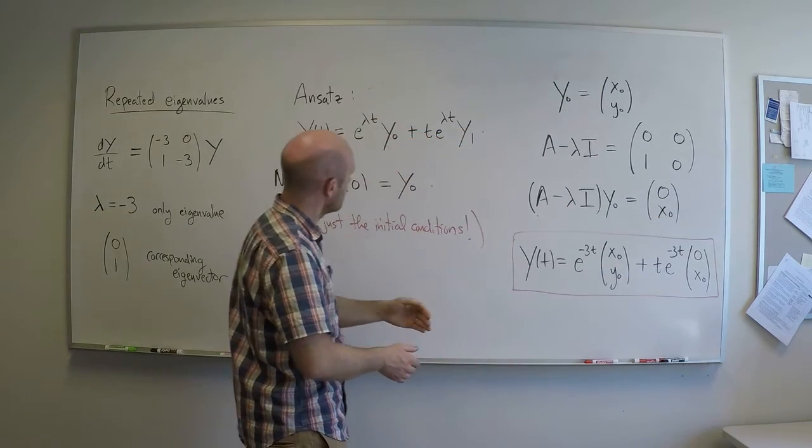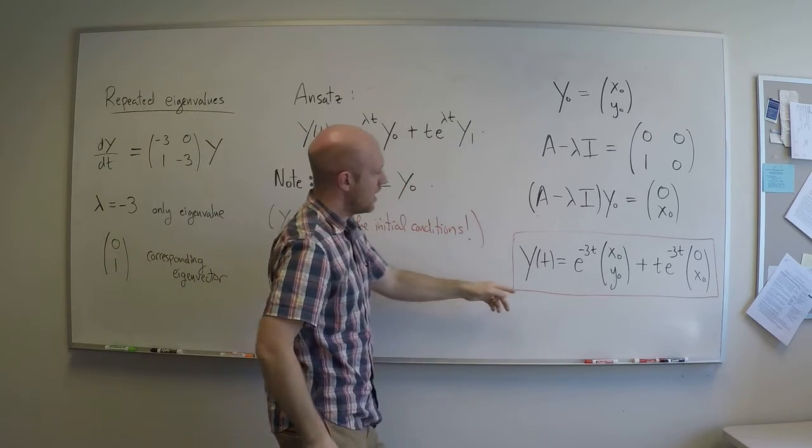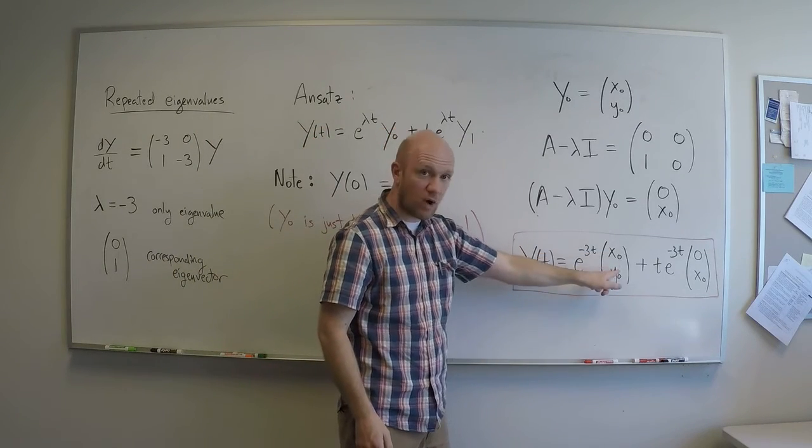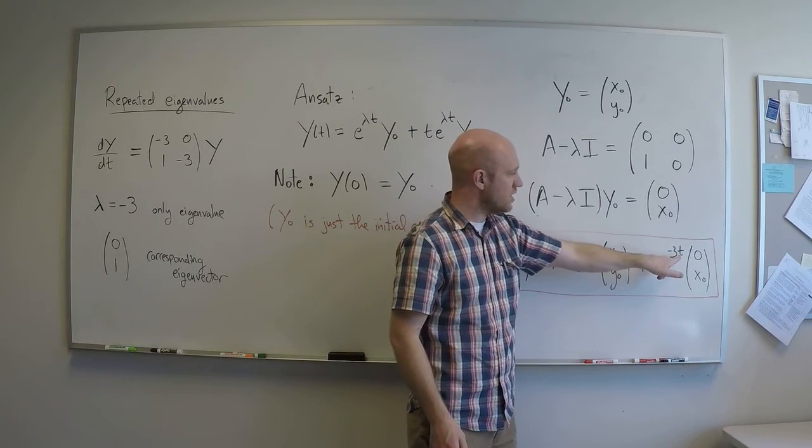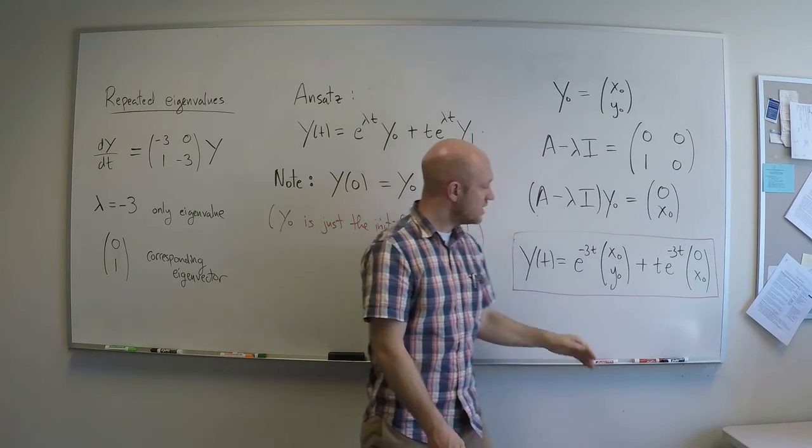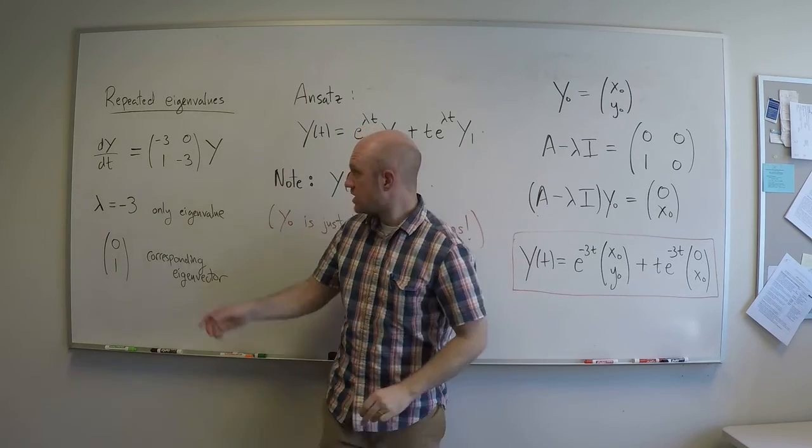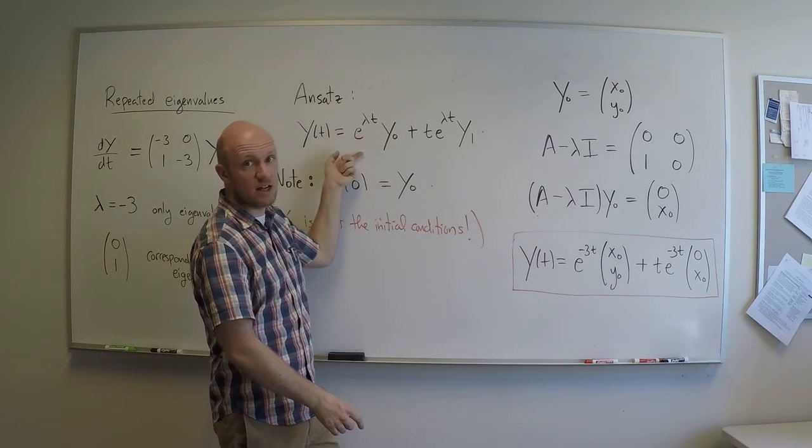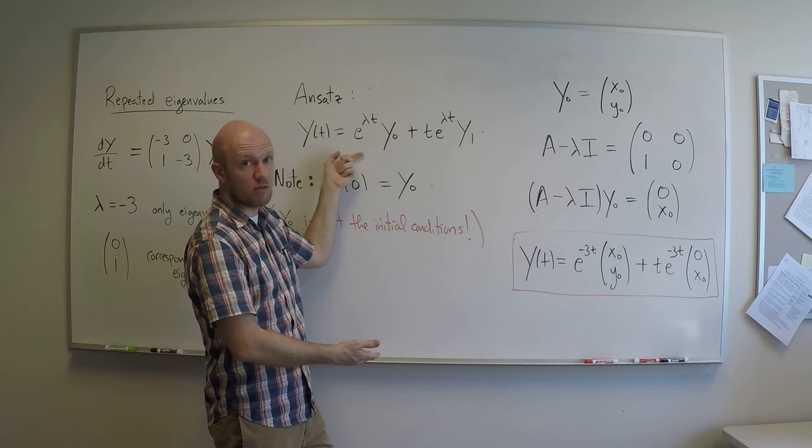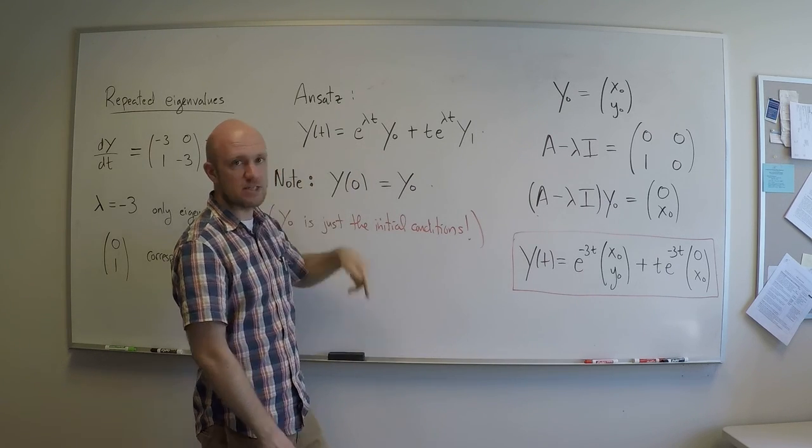So now, assembling all that by putting it all into the ansatz, I have y(t) = e^(-3t) times y0, which is just the initial condition here, plus t*e^(-3t)(0, x0). This is my general solution to this differential equation by using this more sophisticated ansatz and following through the consequences of that ansatz. And that's it.